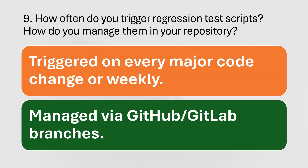How often do you trigger regression test scripts, and how do you manage them in your repository? You can answer that regression tests are triggered on every major code change or weekly — whatever your organization does, answer accordingly. For repository management, we manage our repository using GitHub or GitLab branches.